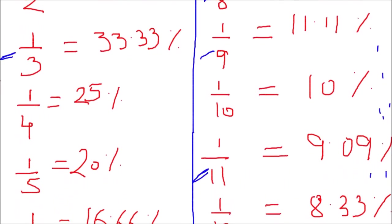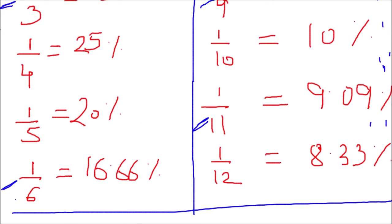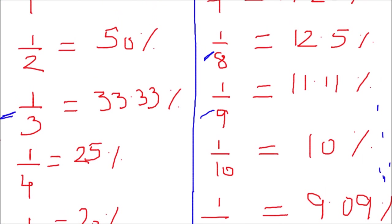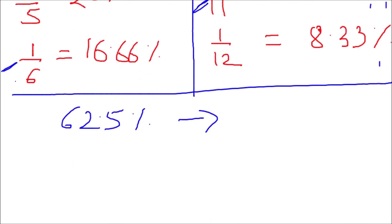Let's start with an example. Suppose you are given 62.5% and you want to find the equivalent ratio. You go back and see which fraction gives a decimal part of .5 — that's 1/8, which is 12.5%. Now if I multiply 1/8 by 5, I get 5 × 12.5 = 62.5%. So the answer is 5/8.